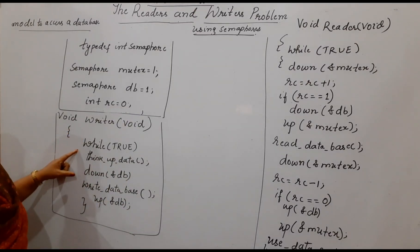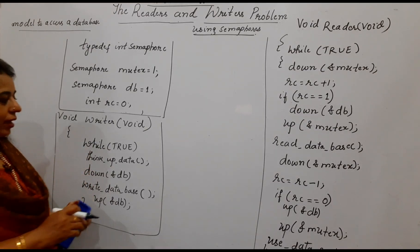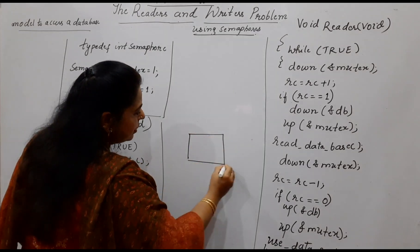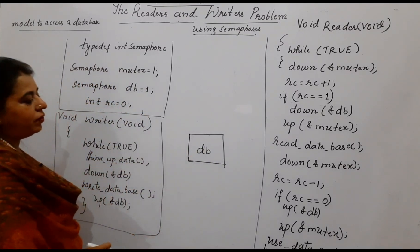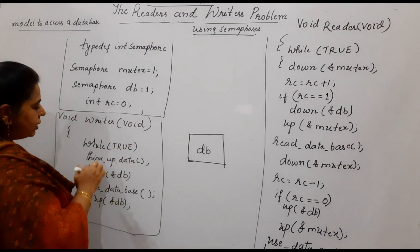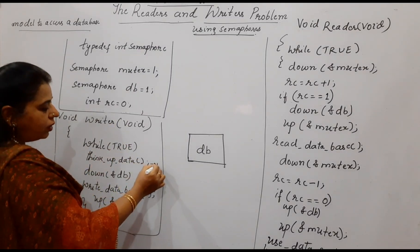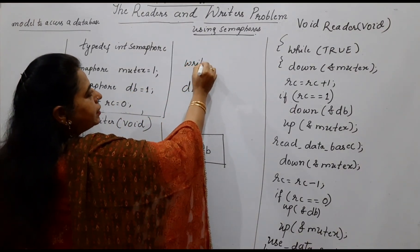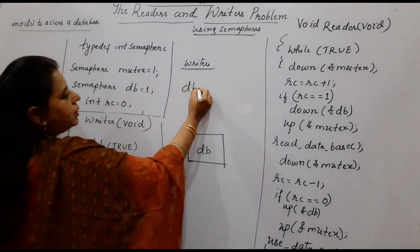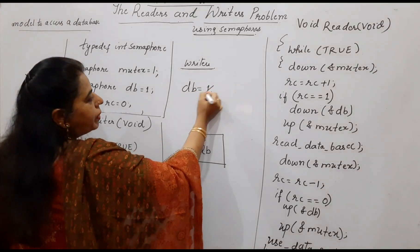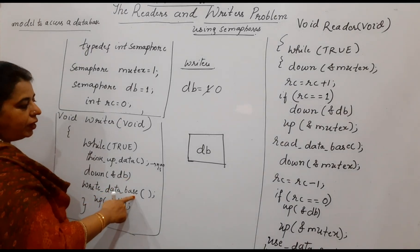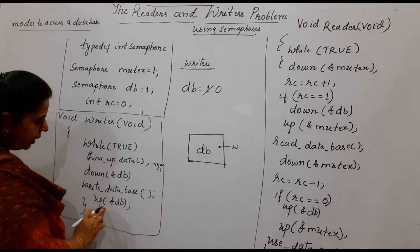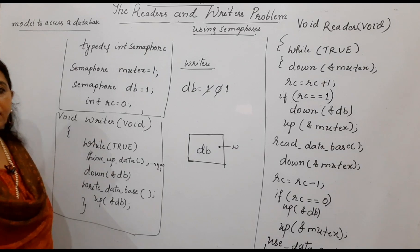The code for the writer seems to be very simple — the number of instructions are very less. The reason is that when the writer is in the critical section, it should not allow any other writer or any other reader. The writer code starts executing with a while-true loop. 'Think of data' is the non-critical section part. First it will perform the down operation on DB. DB value is initially equal to 1. The down operation on DB will make it equal to 0. Then the writer can start writing whatever it wants into the database.